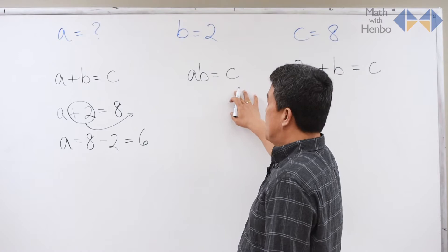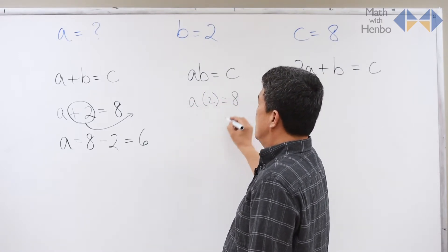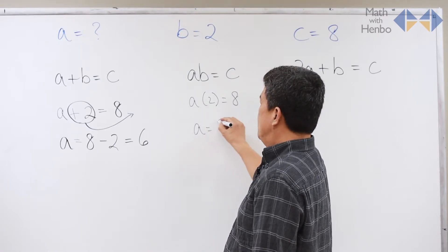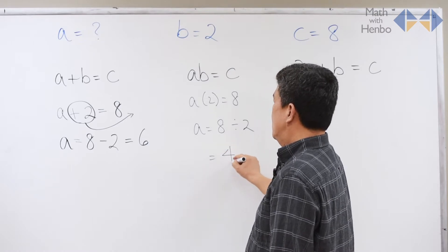When it comes to A times B equals C, A times 2 equals 8. So what is A equal to? Well, it becomes 8 divided by 2, which becomes 4.